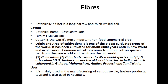Next is fiber. Cotton is an example of fiber. Its botanical name is Gossypium species and its family is Malvaceae. Cotton is the world's most important non-food commercial crop. It originated in many parts of the world about 8,000 years ago. Gossypium hirsutum and Gossypium barbadense are the new world species; Gossypium arboreum and Gossypium herbaceum are the old world species. In India we cultivate high-yield cotton varieties, mainly used for manufacturing various textile, hosiery products, and toys.